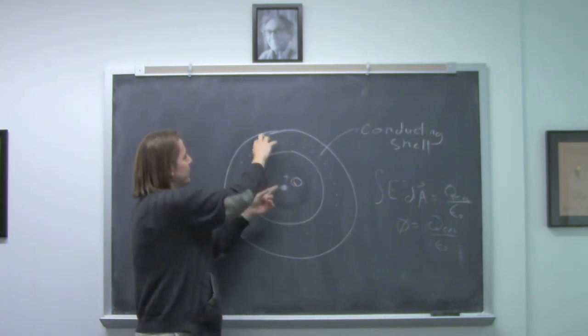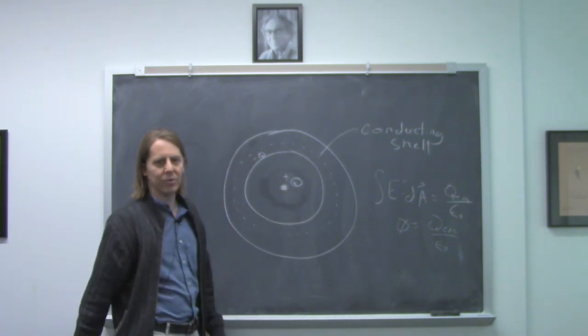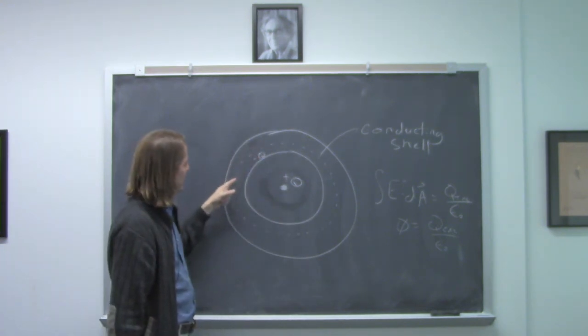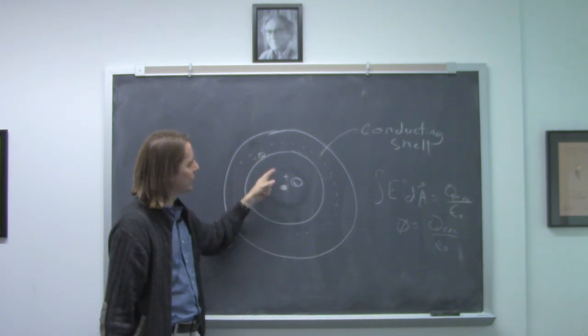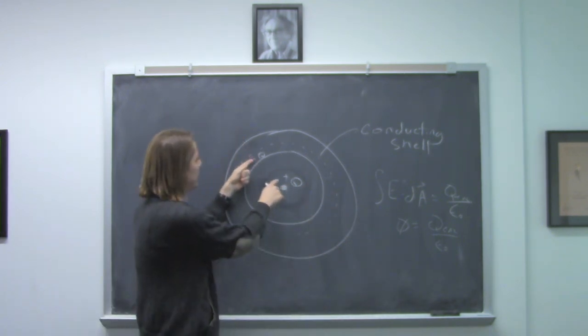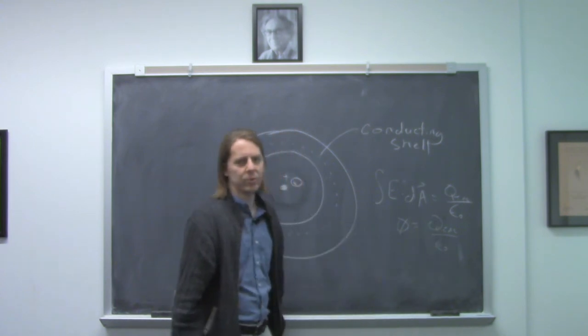And that's what you'd expect because these are free. If a bunch of free negative charges see this positive charge, they're going to come towards it. And enough will come to make the field inside 0. So the total that comes to the inside surface must be minus Q. That way minus Q plus Q gives you Q enclosed of 0.